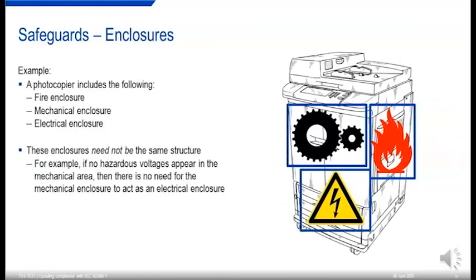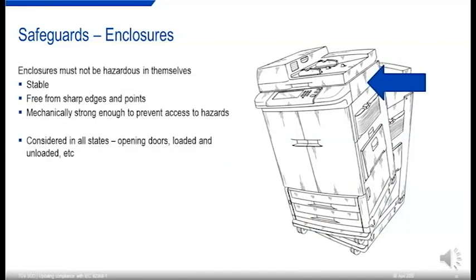People familiar with the legacy standards often think in terms of enclosures. A photocopier might include a fire enclosure, a mechanical enclosure, and an electrical enclosure to prevent access to those hazards. Those enclosures need not be the same structure — if there are no hazardous voltages in the mechanical area, the mechanical enclosure need not act as an electrical enclosure. Enclosures themselves mustn't be hazardous — they must be stable, free from sharp edges and points, and mechanically strong enough to prevent access to hazards in all states the equipment will be used in, including opening doors and loading consumables.